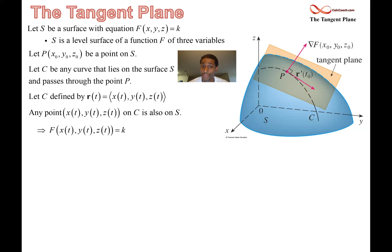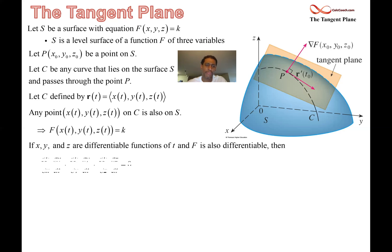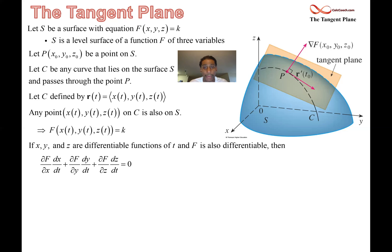We could take its derivative using the chain rule. F is a function of T, and we want to use the chain rule where we take partial derivatives. The partial derivative of F with respect to x gets multiplied by dx/dt. The partial derivative of F with respect to y gets multiplied by dy/dt. The partial derivative of F with respect to z gets multiplied by dz/dt. The other side is a constant, so its derivative with respect to T is zero. We need capital F to be differentiable at our point of interest, but if that's the case, we can set up this equation using the chain rule.